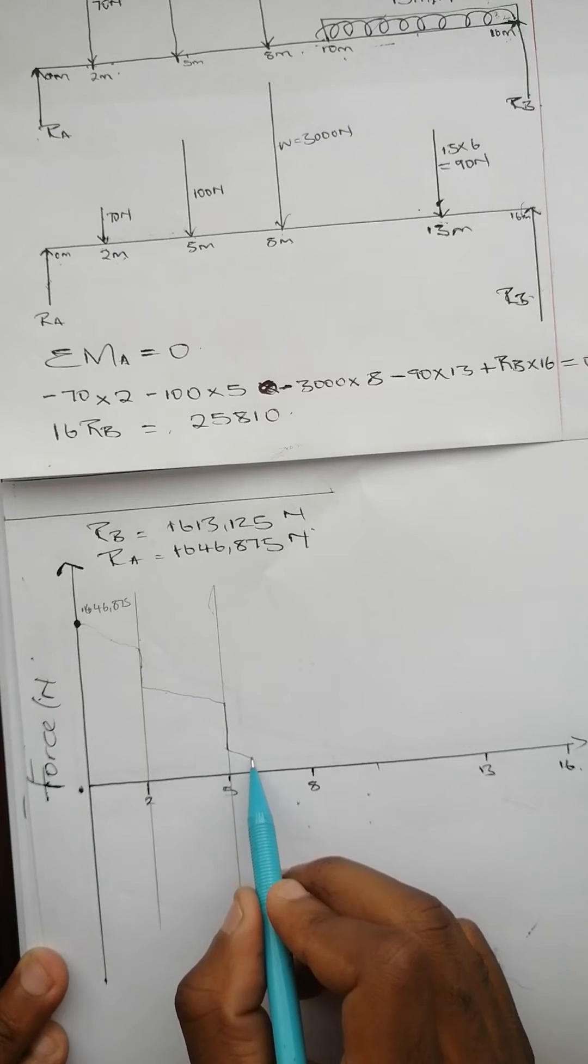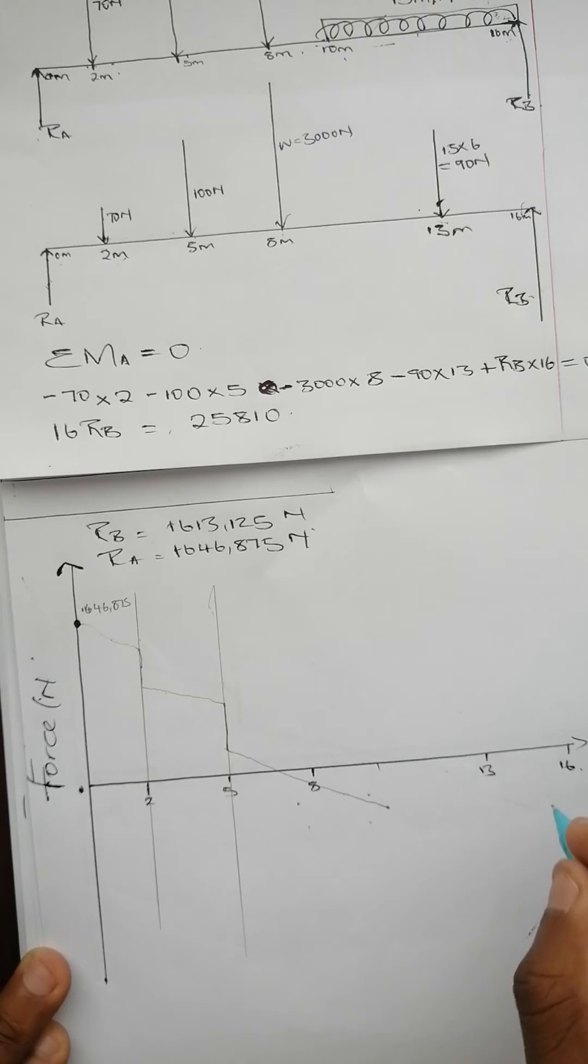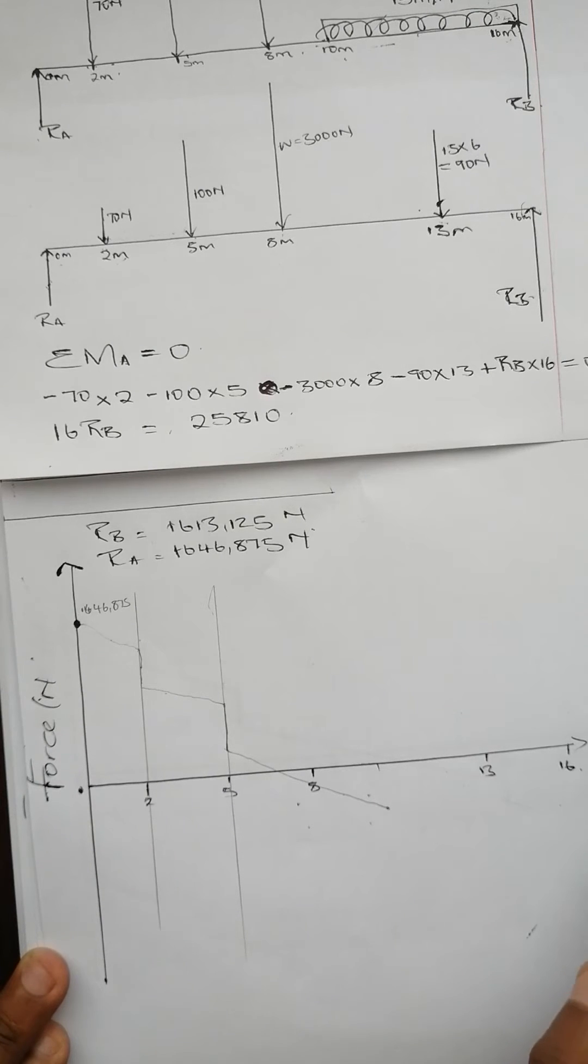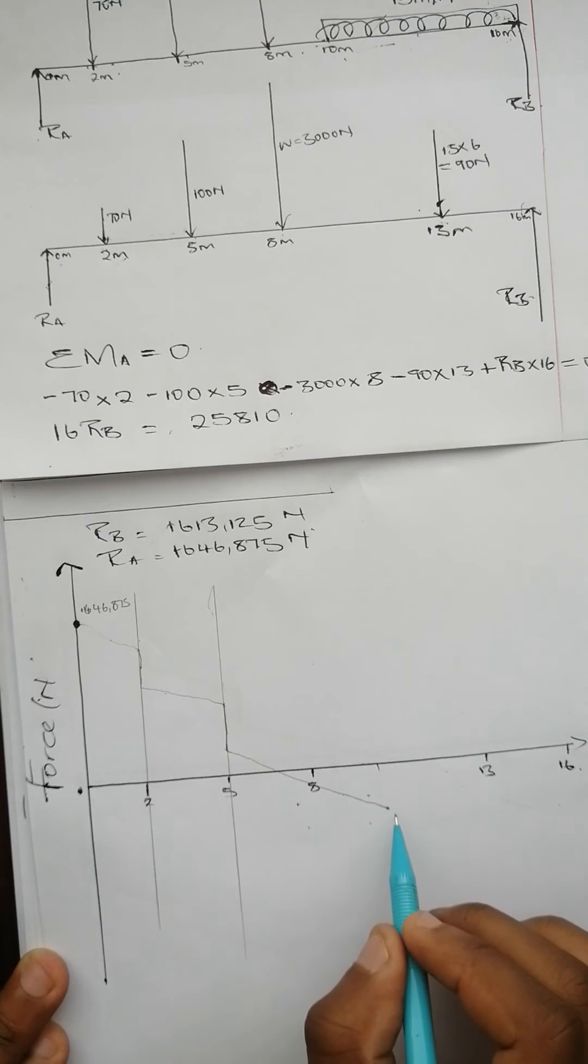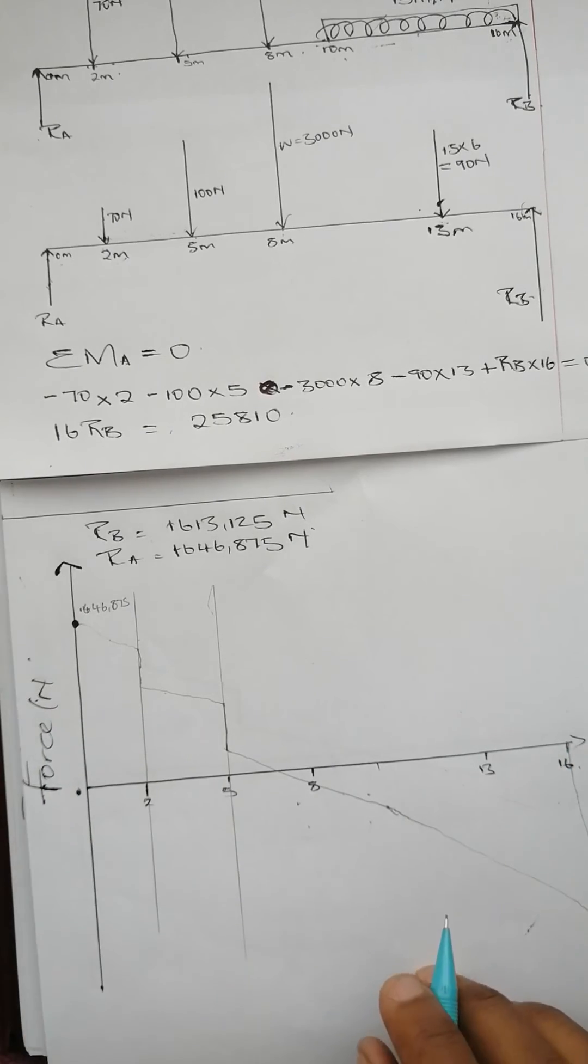From there to 10 meters it slants with the same gradient. Then at 10, since there's another distributed load from 10 to 16, it's going to slant again at a different, steeper gradient up until the last point where it comes back to balance out.